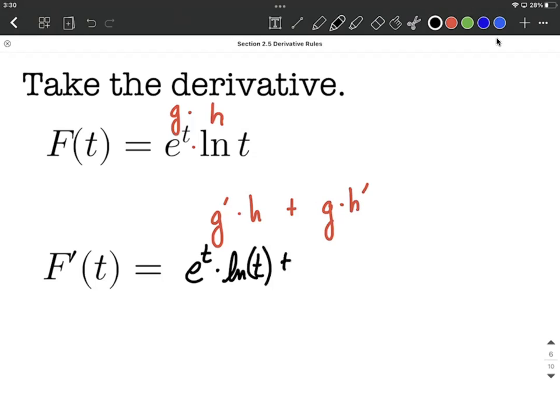Plus, we copy down g of t, which is e to the t, multiplied by the derivative of natural log of t. So in this case, that's going to be 1 over t.